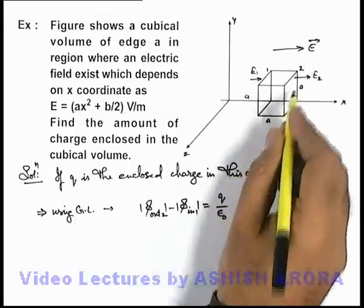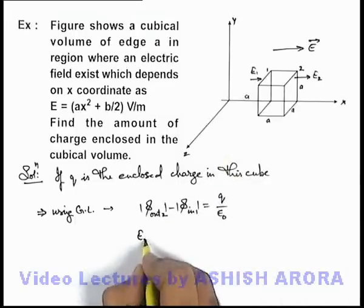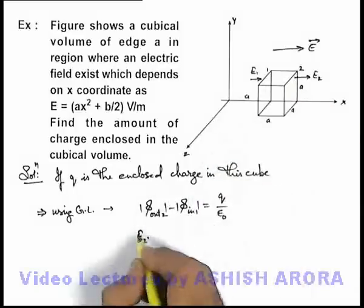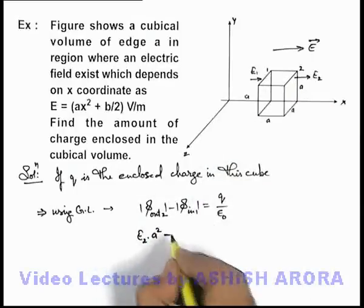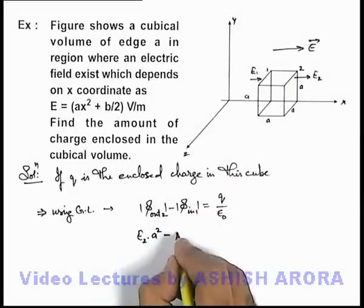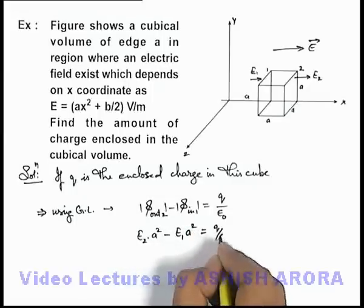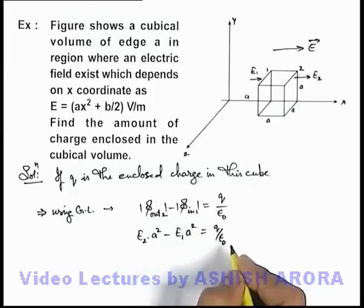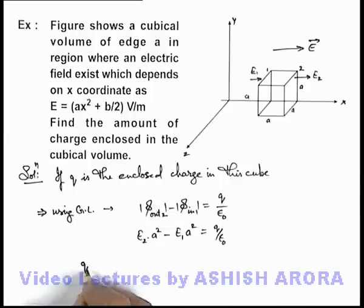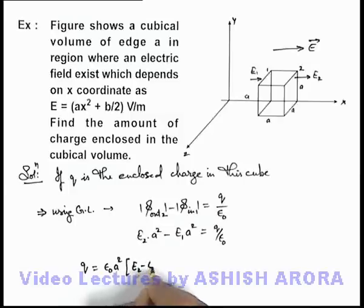Phi out can be written as E2 multiplied by the area of this face which is a². Minus phi in can be written as E1 multiplied by a² equals q by epsilon not. This implies the value of enclosed charge can be written as epsilon not a² multiplied by E2 minus E1.